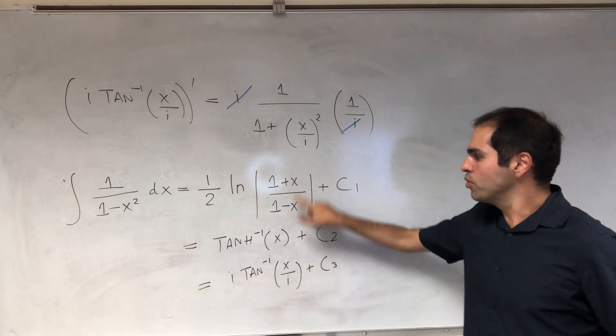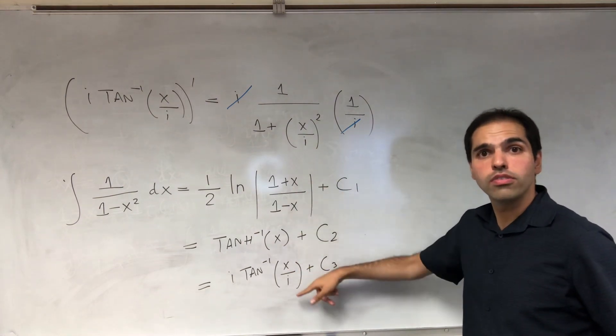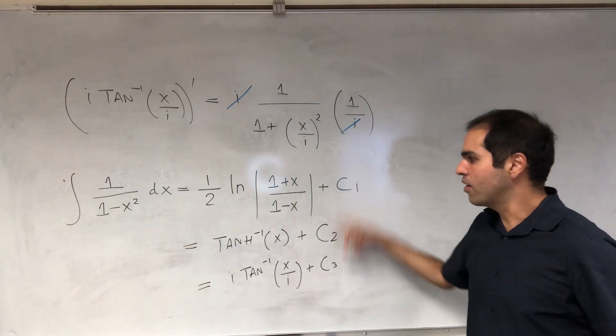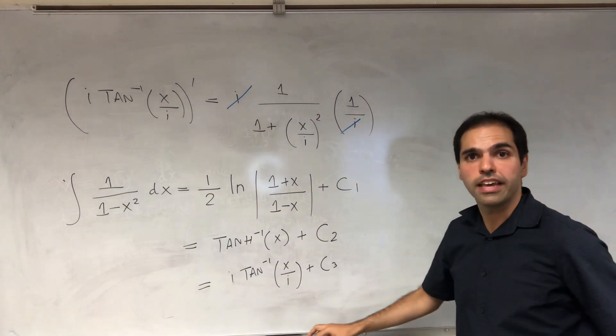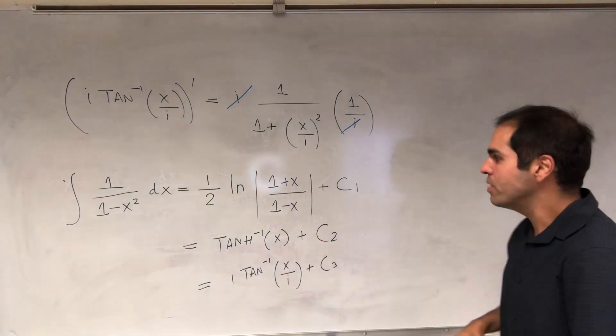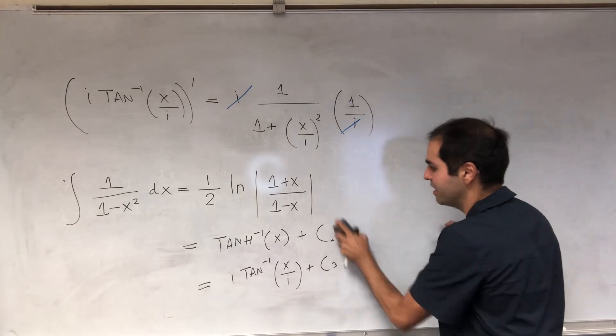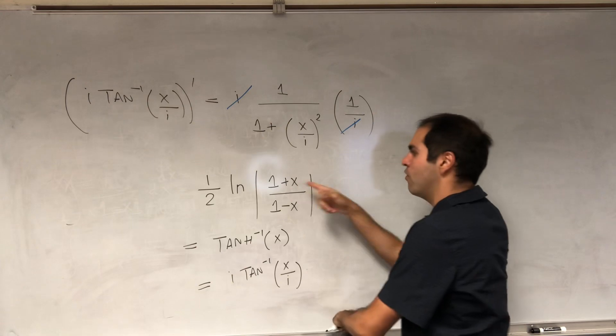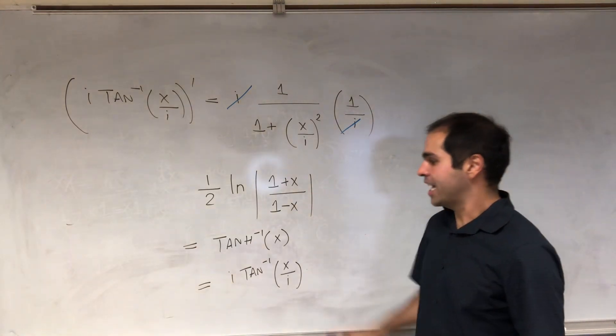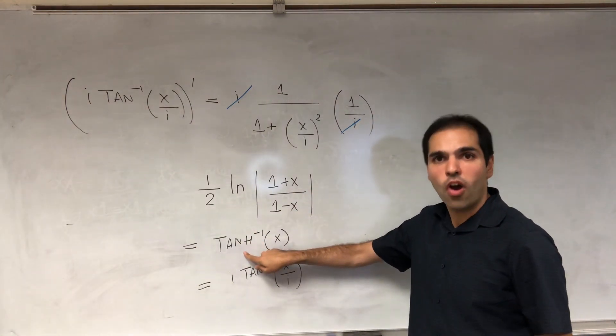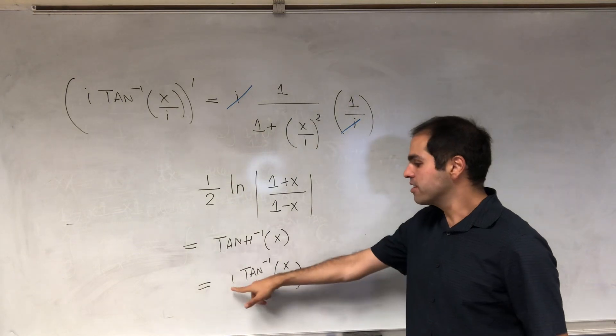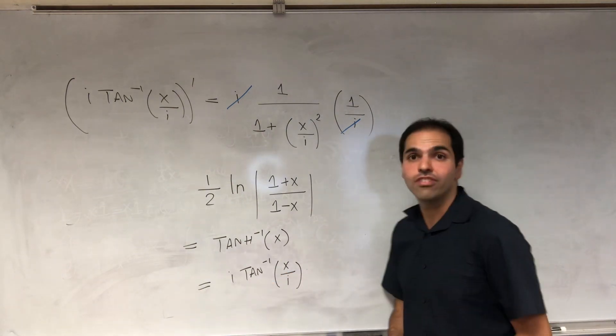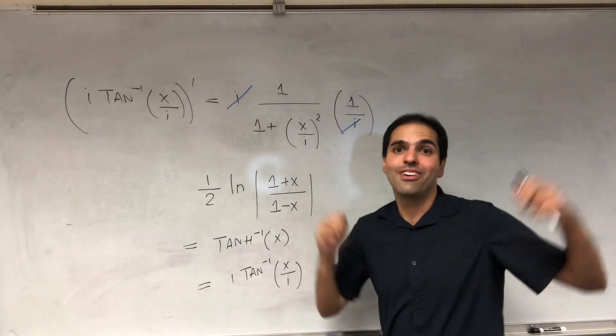plugging in x equals zero in all those equalities, you actually find that all those constants are the same. So in particular, we do have this new identity that one half ln of 1 plus x over 1 minus x is actually the same as arctangent, and which is the same thing as i arctangent of x over i. How cool is that?